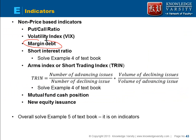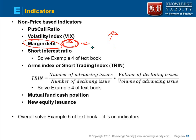Margin debt is the debt that people hold in their margin accounts. When people are expecting the market to go up, they will buy stocks on margin, causing margin debt to increase. So if margin debt is increasing, it means that people are bullish on the market.